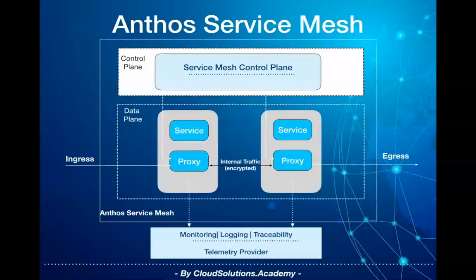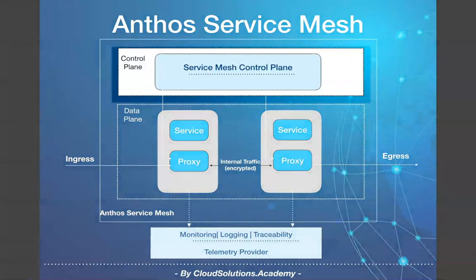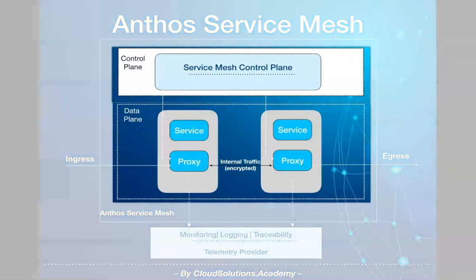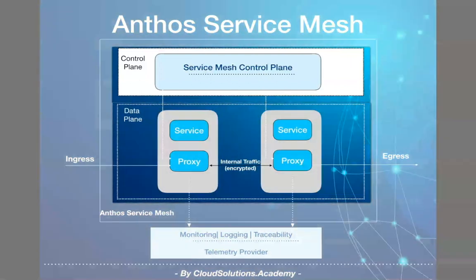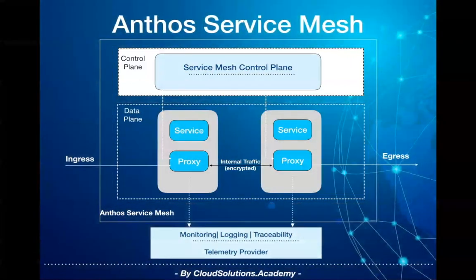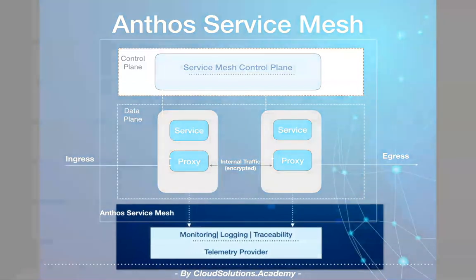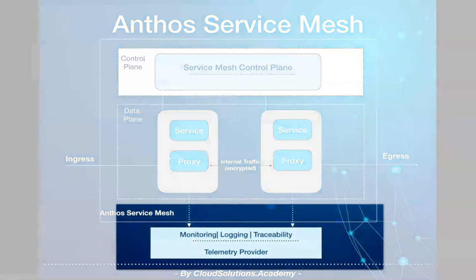Now let's look at the architecture for Anthos Service Mesh. The architecture consists of a control plane, data plane, and a flexible architecture that allows various telemetry providers to capture telemetry data.